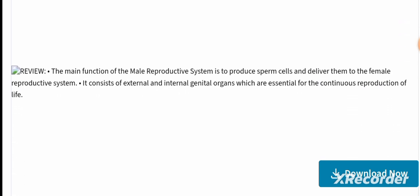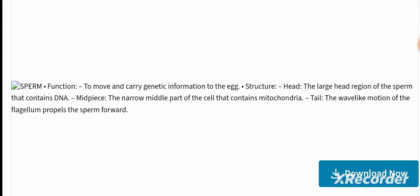The main function of the male reproductive system is to produce sperm cells and deliver them to the female reproductive system. It consists of external and internal genital organs essential for reproduction. A sperm cell has three parts: the head, which contains DNA; the midpiece, which contains mitochondria; and the tail, whose flagellum wave-like motion propels the sperm forward.